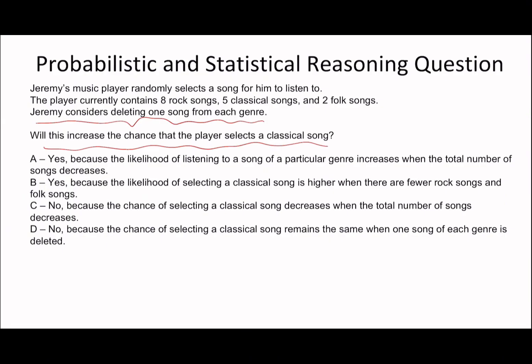These kind of questions should be your bread and butter. So, selecting a classical song, the original chance is 5 out of 15, which is a third. Now that we delete one from each genre, one from the classical and three from the bottom, it stays as a third.